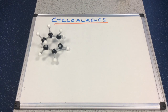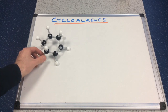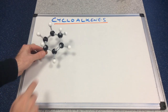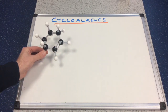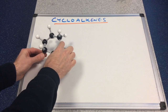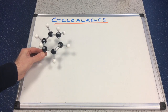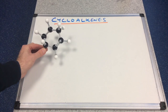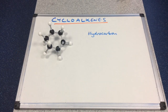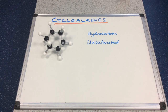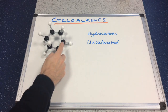In this video I'm going to look at cycloalkenes. I've made a model of cyclohexene. It's a cyclic ring structure with six carbons in the ring and one carbon-carbon double bond. This is an example of a cycloalkene. Cycloalkenes are hydrocarbons because they contain carbon and hydrogen only. They are unsaturated hydrocarbons because of the presence of this carbon-carbon double bond.